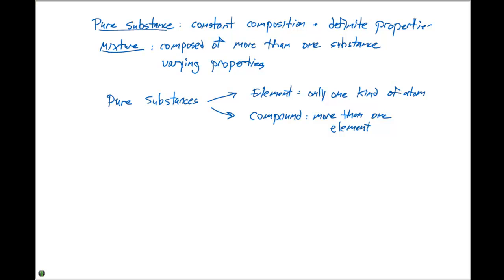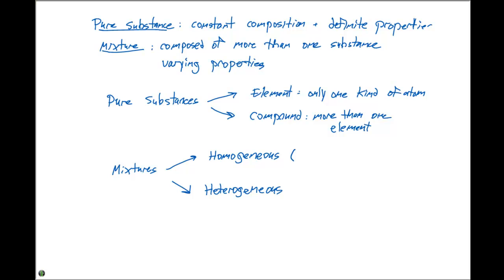We also have two main types of mixtures: homogeneous and heterogeneous. A homogeneous mixture is uniform and consists of one phase. A heterogeneous mixture is not uniform and will consist of more than one phase.